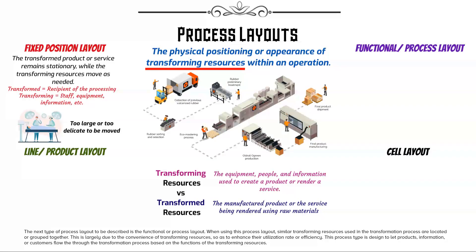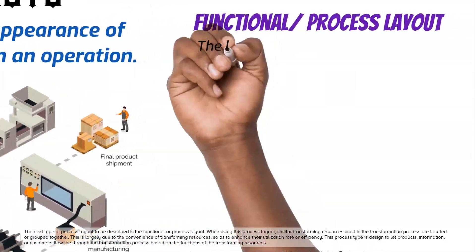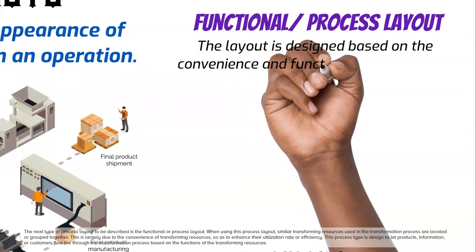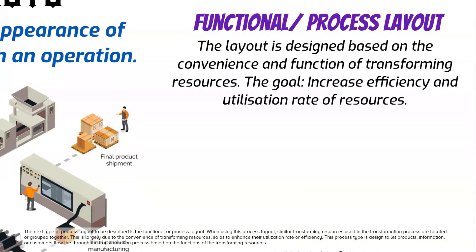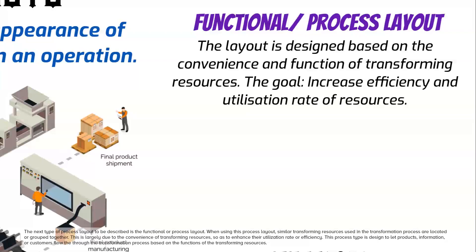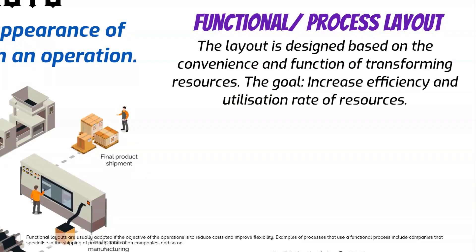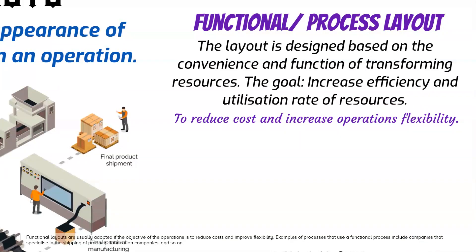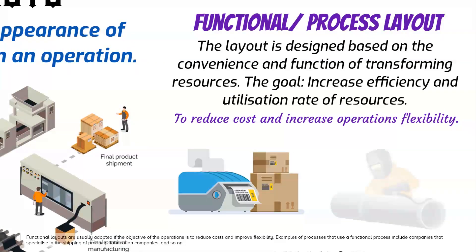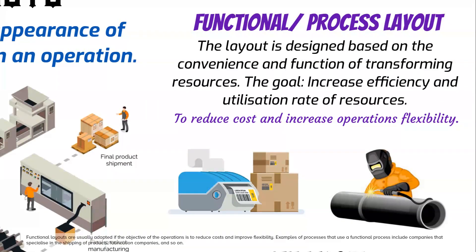Examples of products that require a fixed position layout are medical or surgical operations and construction projects such as bridges, roads, and buildings. The next type of process layout is the functional or process layout. When using this process layout, similar transforming resources used in the transformation process are located or grouped together. This is largely due to the convenience of transforming resources so as to enhance their utilization rate or efficiency. Functional layouts are usually adopted if the objective is to reduce costs and improve flexibility. Examples include companies that specialize in shipping of products, fabrication companies, and so on.